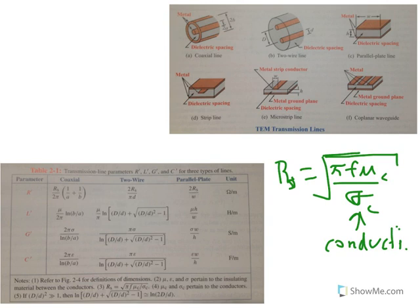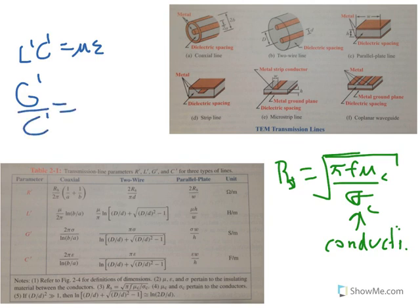Lastly, all TEM transmission lines have the following two useful relationships. We have L' C' equals μ times ε. And we have G' over C' is equal to σ over ε. So this is a pretty qualitative introduction to transmission lines. In the next video, we'll begin formulating equations to analyze lines and also do some examples. Thanks for watching.